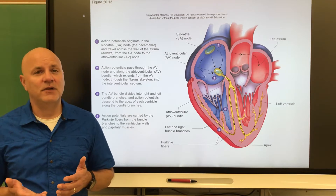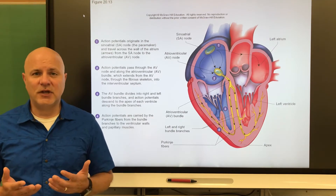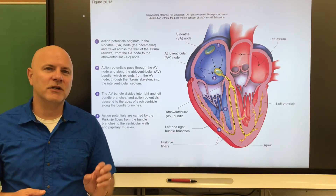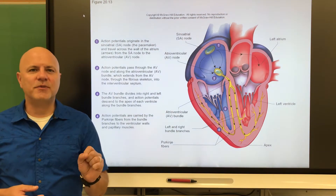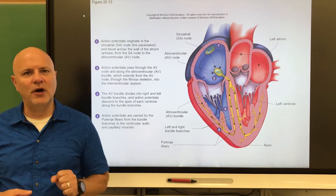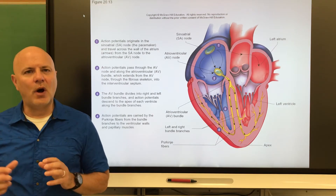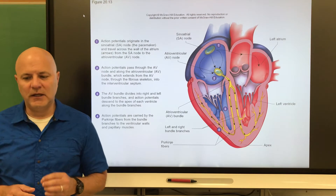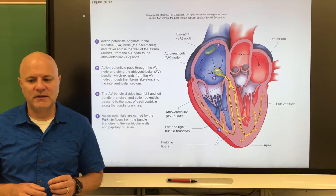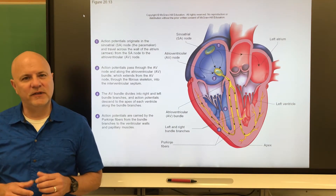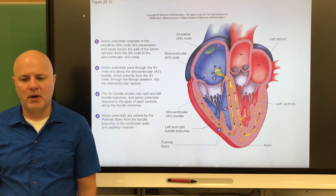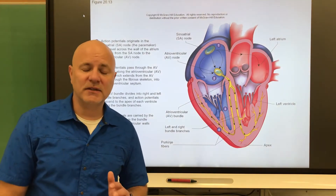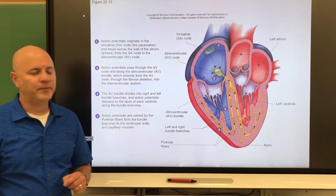Anaerobic respiration produces lactic acid, and the acidity within those cells builds up, interfering with ATP production. Interestingly, the gap junctions from those damaged cells close to wall off that acidity, isolating the damaged cells. If this occurs over a large area, that is what we call a heart attack.